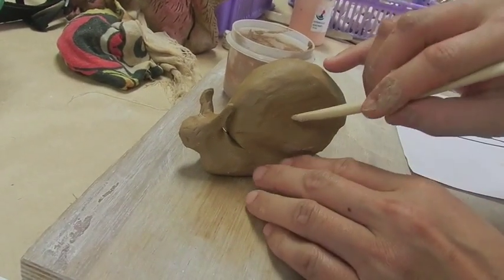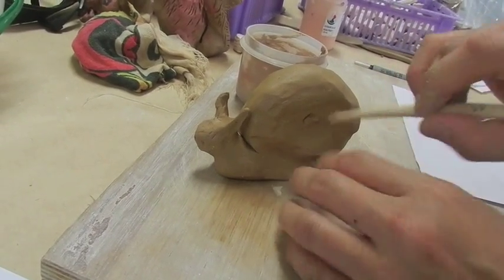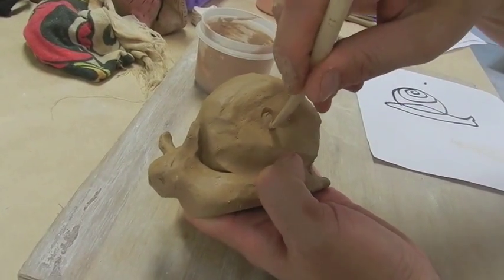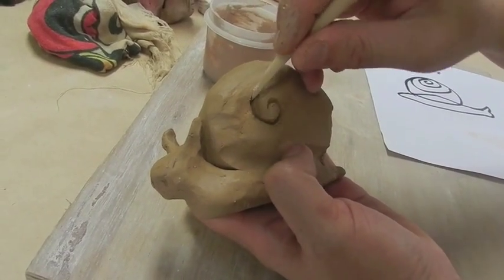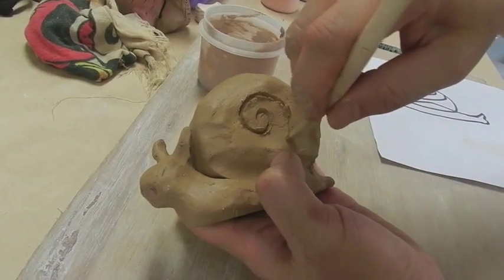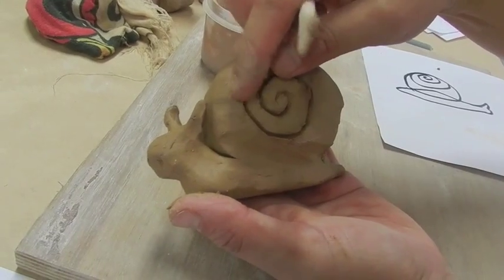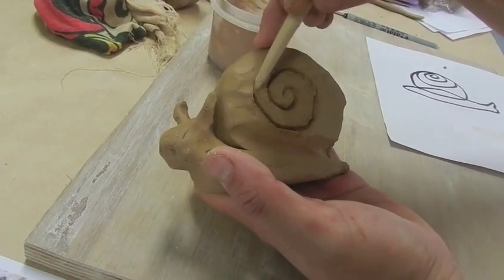Then we're going to make decorative lines. Put it in your palm. If you make a mistake, just erase like that and continue.